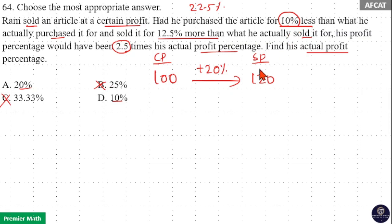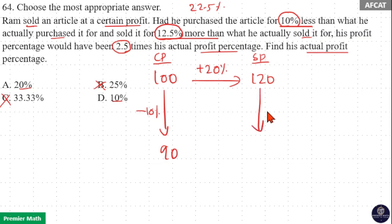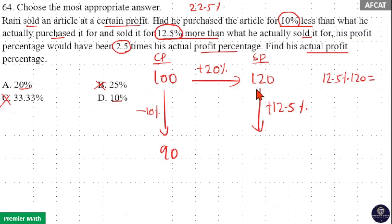10 percent less means he should purchase it for 90 rupees. If he sells it for 12.5 percent more than the original selling price of 120 — 10 percent of 120 is 12, so 12.5 percent of 120 is 12 plus one-fourth of 12, which equals 15. So 120 plus 15 is 135.